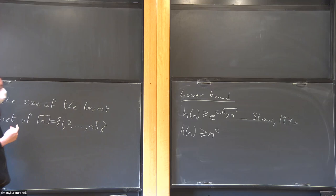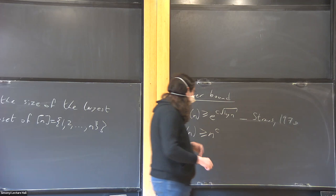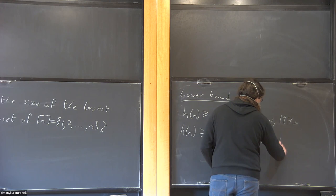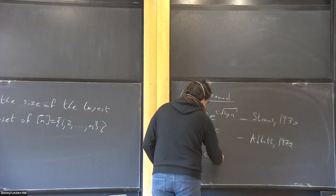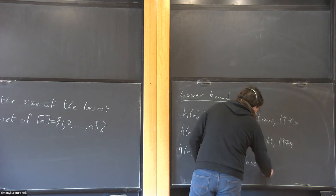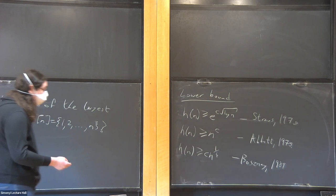These constructions are roughly of some Behrend type, and this suggests it might be a Behrend-type bound. The best that's actually known up to this point — and still the best now — is the result from 1989 by Bosne, which gives an exponent of one quarter.